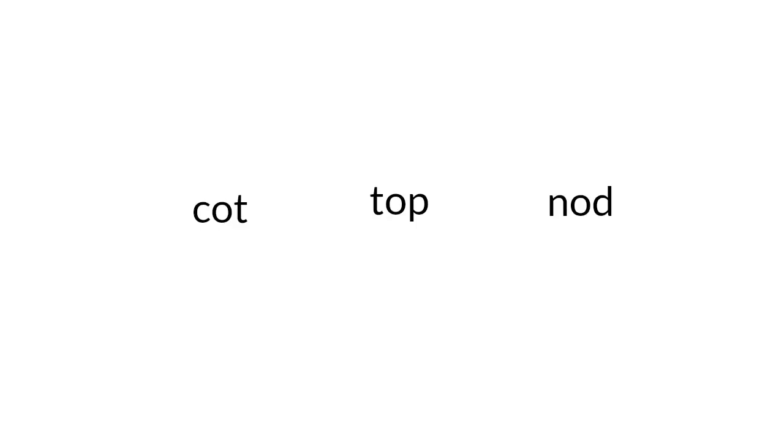Now look at these words. All these words have the short O in the middle. Can you read them for me? Now let's read them together. C, O, t, Cot, Cot, Cot. T, O, P, Top, Top. N, O, d, Nod, Nod.